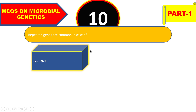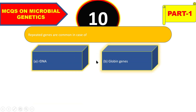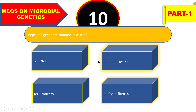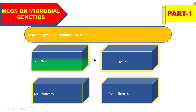Final question: repeated genes are common in the case of rDNA, globin genes, pleiotropy, or cystic fibrosis? The right answer is rDNA (ribosomal DNA). These are all the MCQs in this part of the video on microbial genetics. Thank you for watching.